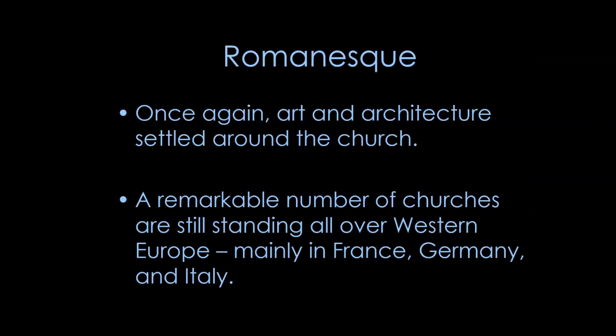In the Romanesque period, art and architecture are all centered around the church. It is still a fairly rural setting, so the church was the center of cities and cultural areas — people would come in from rural areas to go to the church, and that is where all the art is. If you go to Europe today, you can still see quite a few Romanesque churches standing, mainly in France, Germany, and Italy, but they are really all over the place.